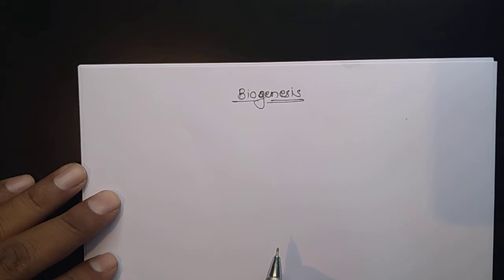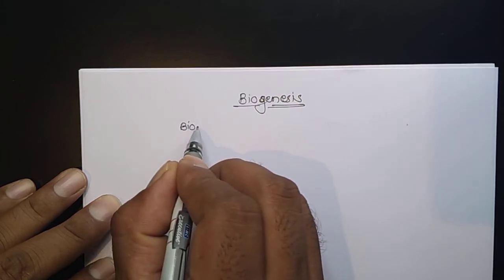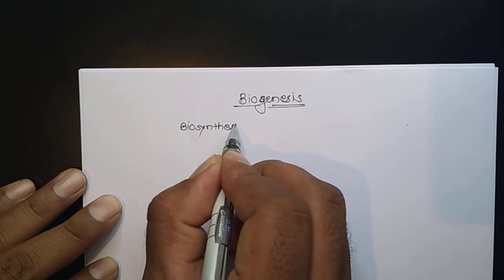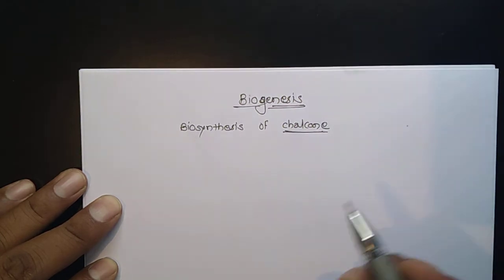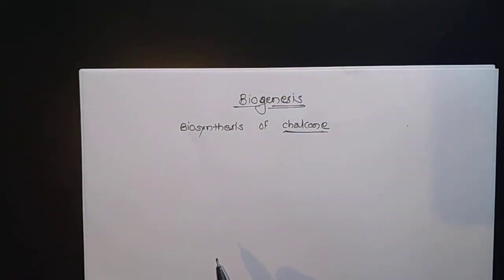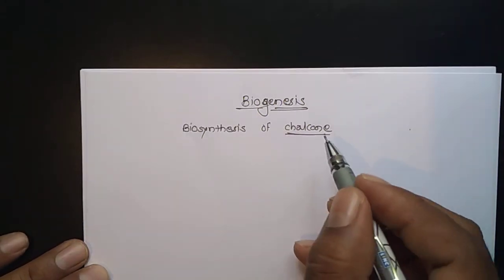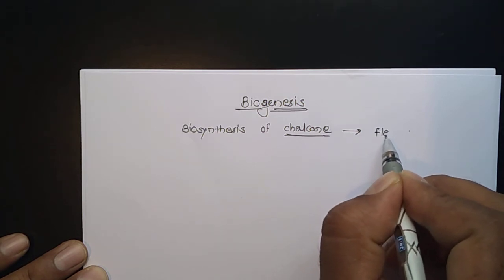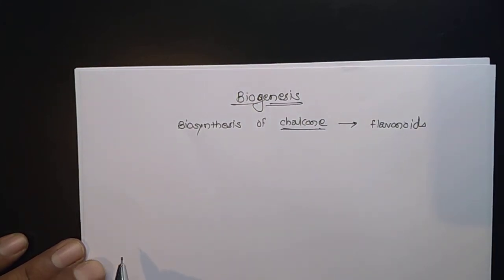I will write down: biosynthesis of chalcone. This chalcone is a very important compound found in natural places — it is found in most plant tissues. Chalcone is also a precursor of another important compound, which is flavonoids. So first of all we will start to learn about the chalcone.